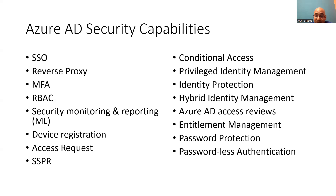Azure AD Application Proxy lets you publish on-premises applications such as SharePoint sites, Outlook Web App, and IaaS-based applications inside your private network and provide secure access to users outside your network. Azure AD Multi-Factor Authentication requires more than one verification method, adding a critical second layer of security to user sign-ins and transactions. Azure RBAC is an authorization system built on ARM that provides fine-grained access management of Azure resources. Azure AD access and usage reports give visibility into the integrity and security of your organization's directory. Azure AD device registration provides devices with an identity used to authenticate when a user signs in.